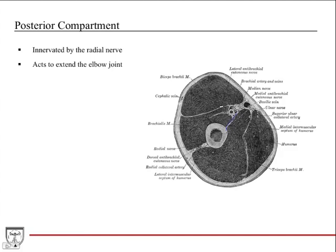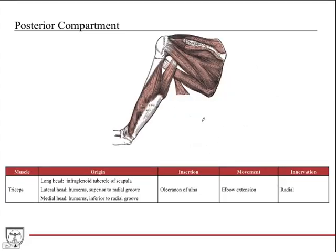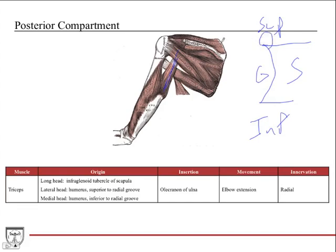The posterior compartment's main function is elbow extension, and the triceps is the only muscle here — a large muscle with three heads. The radial nerve travels close to the humerus in the spiral groove, then wraps around and pierces the septum to travel down the lateral aspect of the arm. The long head of the triceps goes to the infraglenoid tubercle of the scapula. Key point: the long head of both biceps and triceps attach on either side of the glenoid fossa — biceps at the supraglenoid tubercle, triceps at the infraglenoid tubercle.